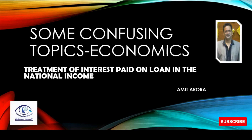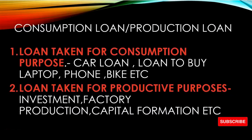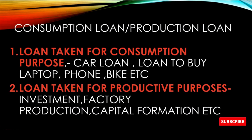So today we will know how interest is treated in national income. First, we need to know where this loan is going — which purpose it serves. So let us see how many types of loans there are. There are two types of loans: consumption loan and production loan.